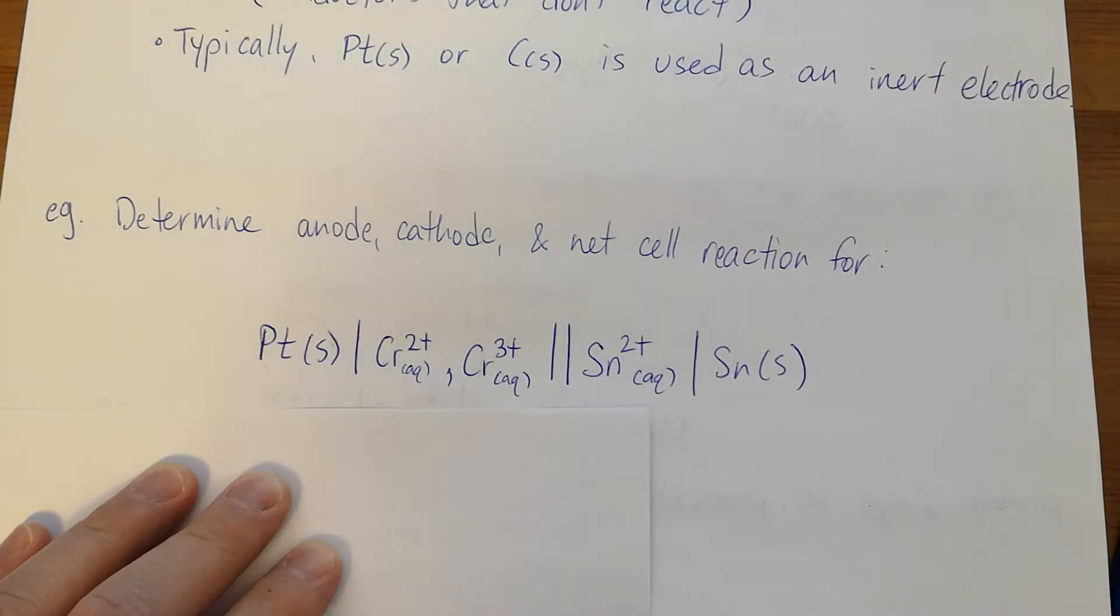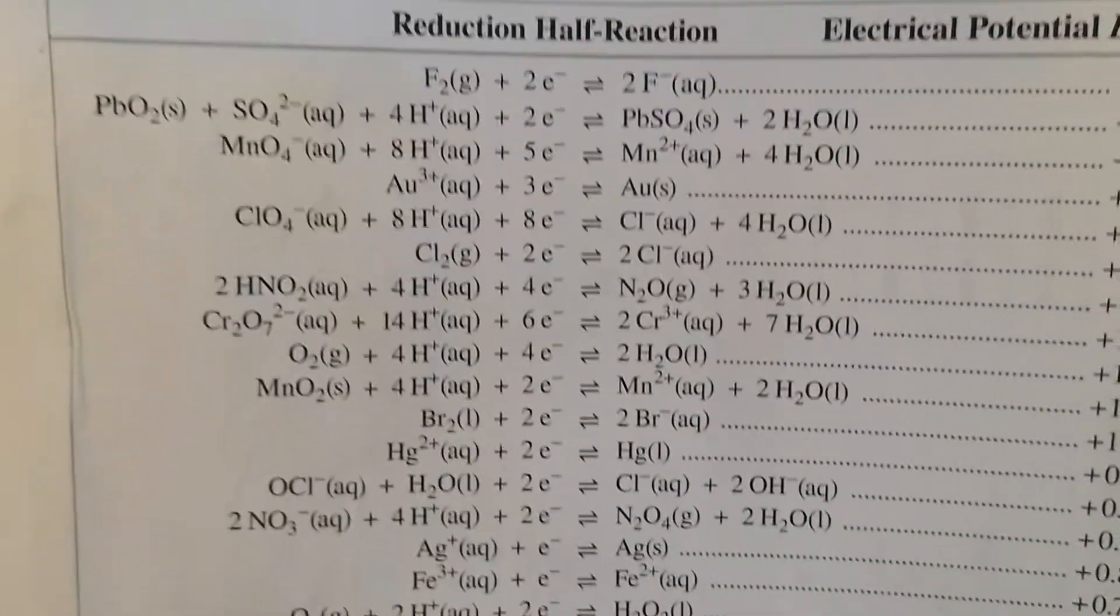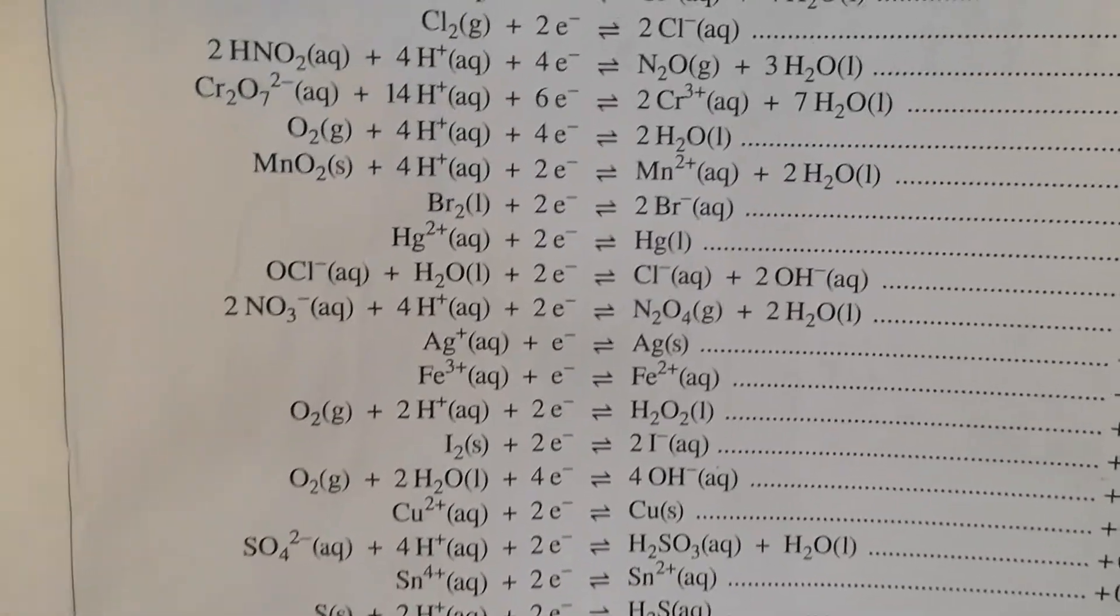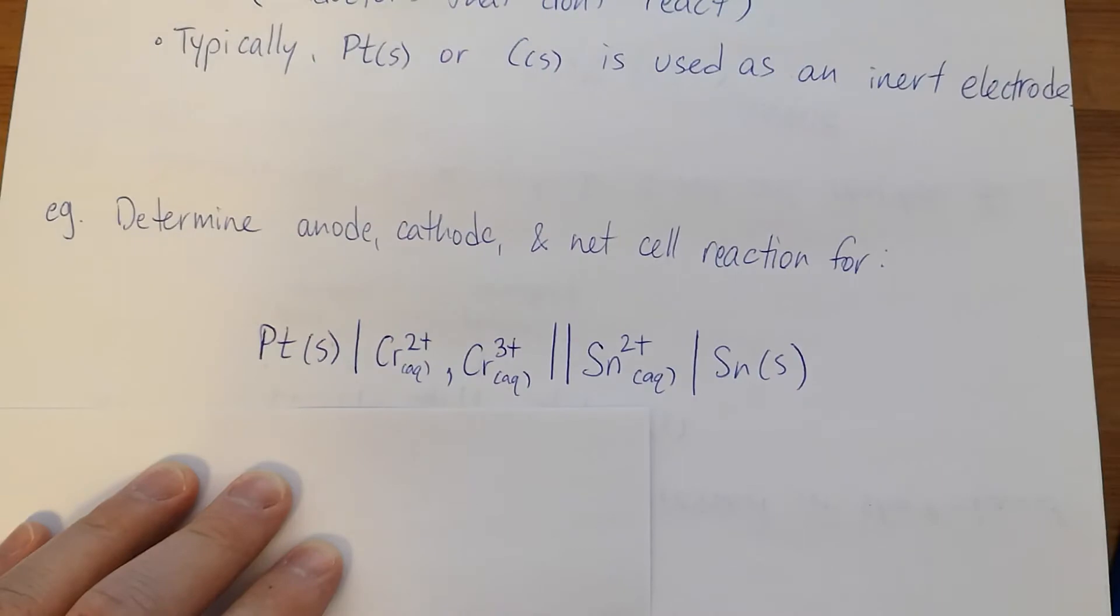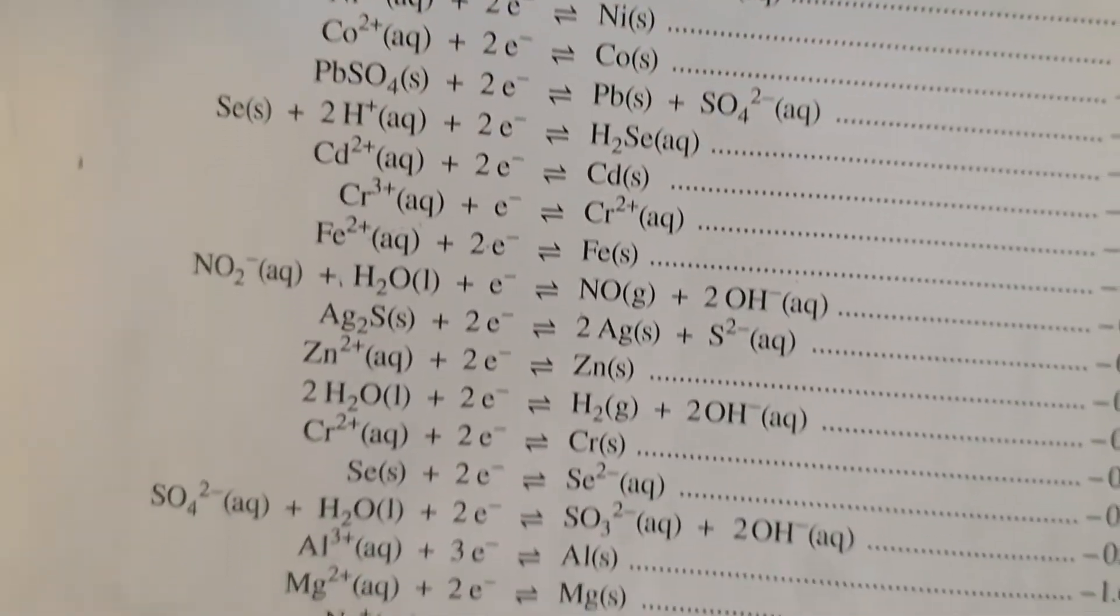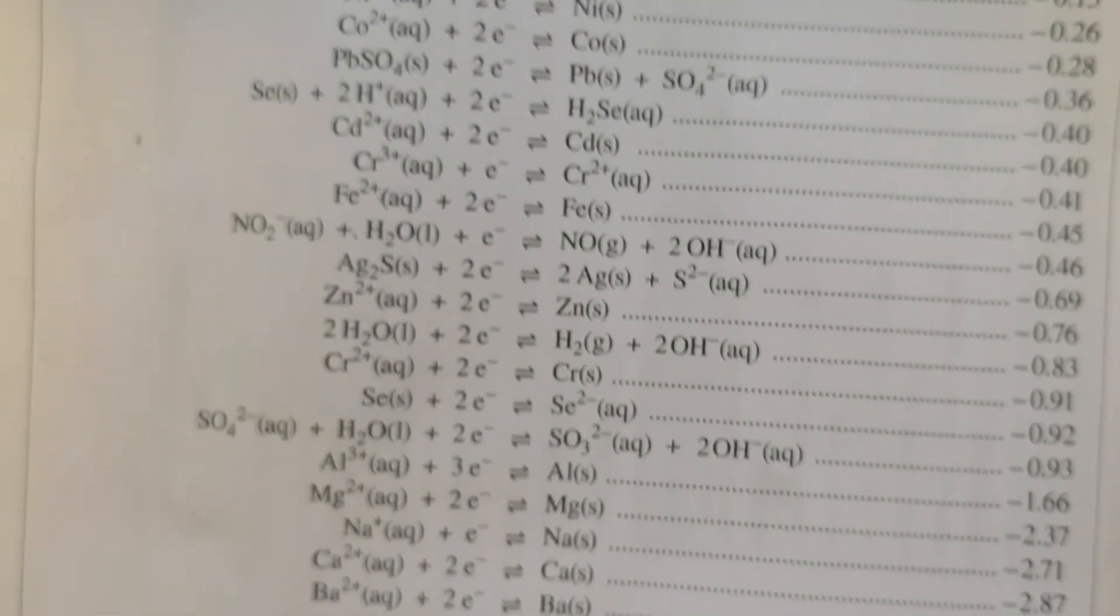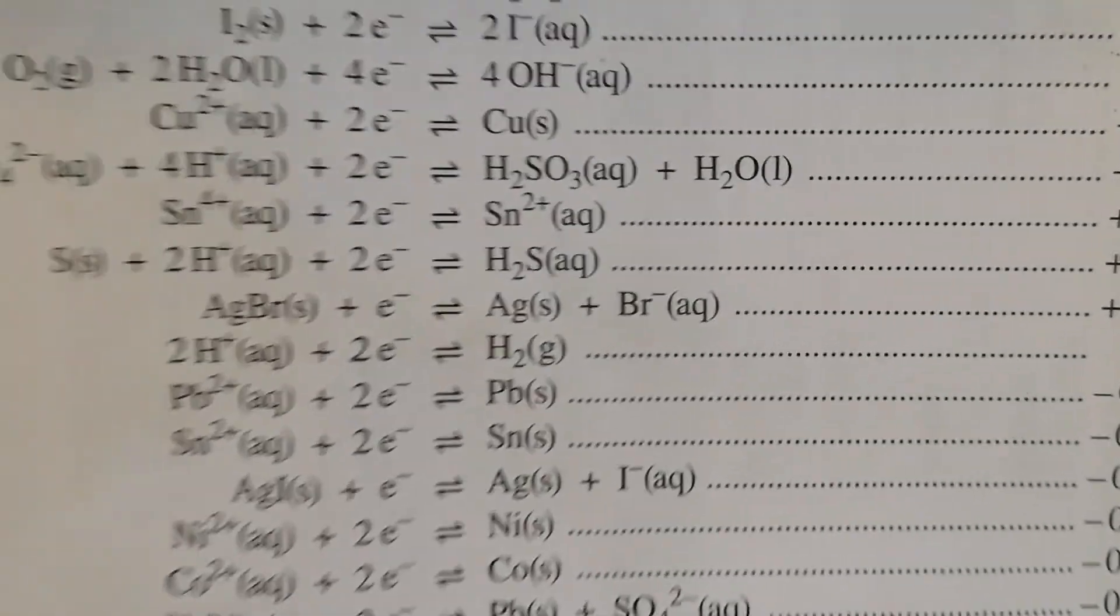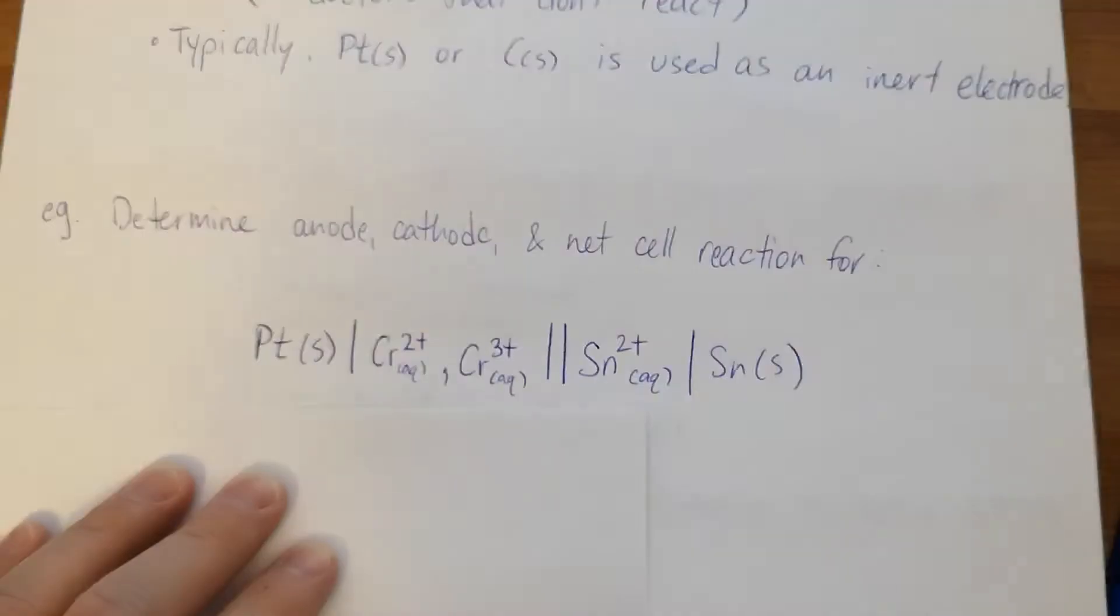As before, we're just going to look in our redox table, find the SOA and the SRA. So I'm starting at the top left. I see tin four. We don't have tin four. Let's keep looking. Got to look a couple times. Whoa. What's that? I see tin two. That's our SOA.